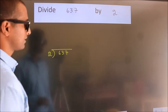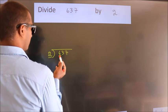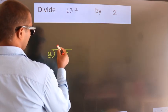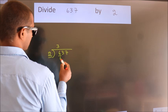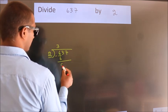Next, here we have 6, here 2. When do we get 6 in the 2 table? 2 times 3 is 6. Now we should subtract. We get 0.